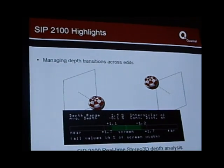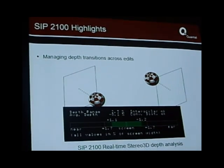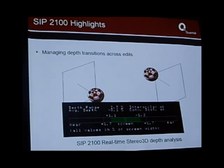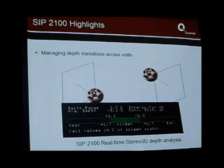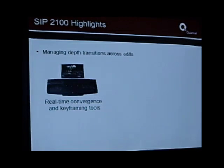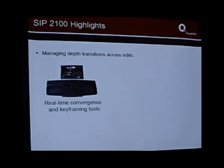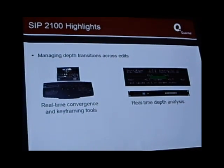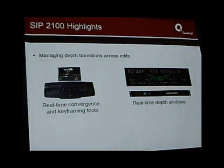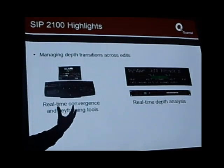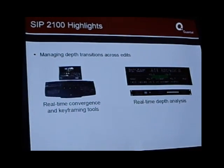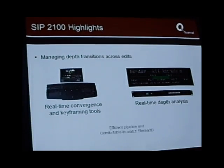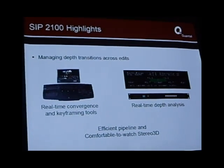Fortunately, the SIP 2100 has a real-time stereo depth analysis meter, which is easy enough for even me to understand. If it's green — cool. If it's amber — be careful. If it's red — do something about it. Very simple. In conjunction with the real-time convergence and keyframing tools of Pablo, and the real-time depth analysis inside the SIP 2100, you can very easily manage depth transitions. Even if you want to edit between something in front of the screen and behind the screen, you can keyframe a smooth transition so your brain has time to adapt. It's all about making an efficient pipeline and producing great, comfortable-to-watch stereo.